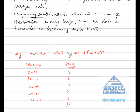For example, marks obtained by 20 students: Classes 0 to 10, frequency 4; 10 to 20, frequency 6; 20 to 30, 7; 30 to 40, 5; 40 to 50, 2. Total number of students is 20.